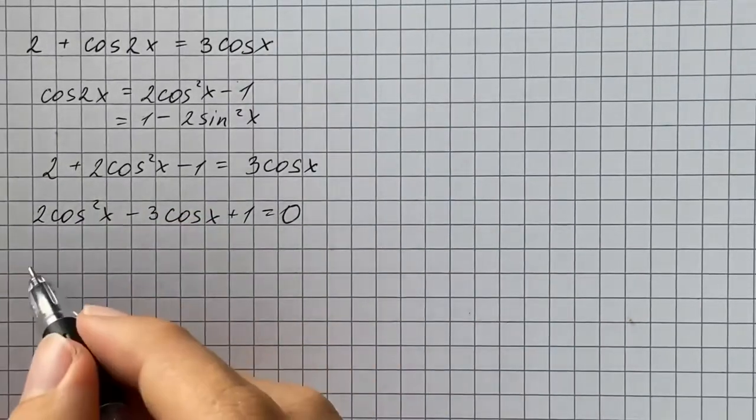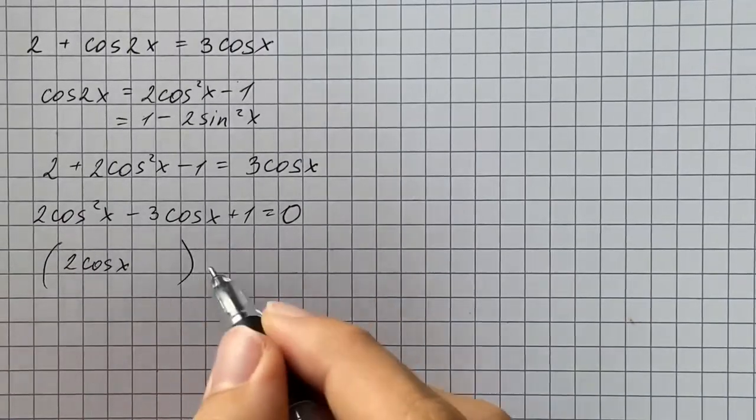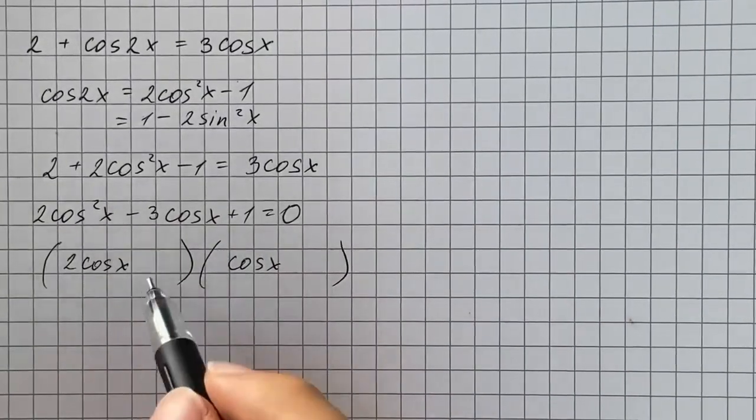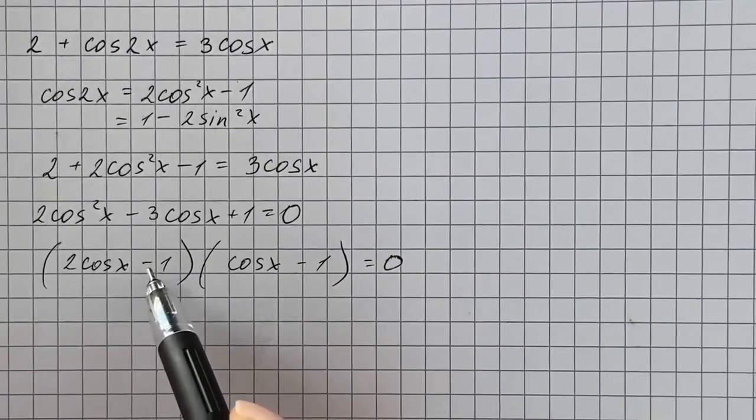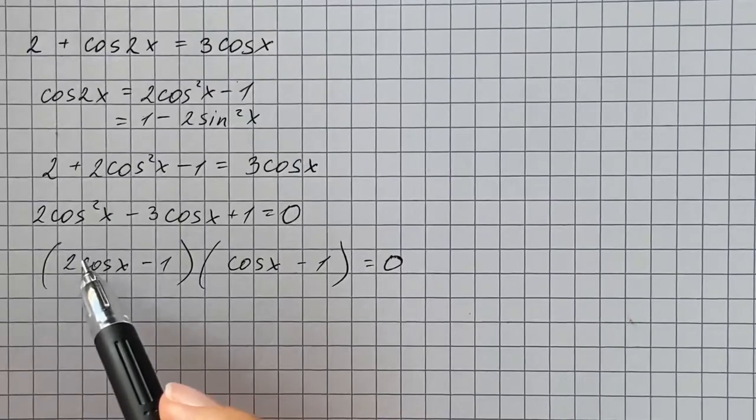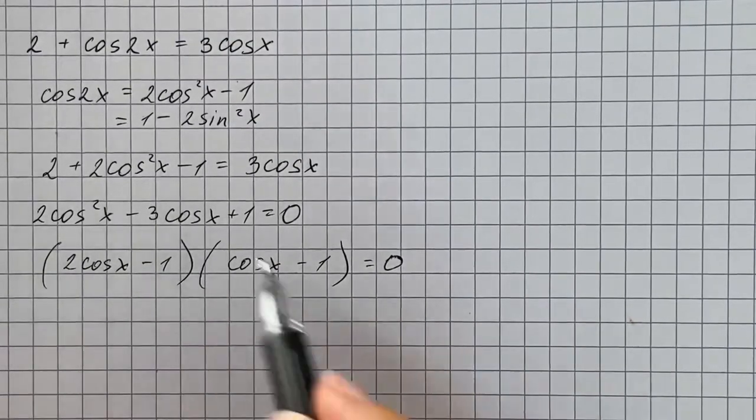And we're going to factor this. So that's going to be factor as 2 cosine of x and cosine of x. And here we're going to use minus 1 and negative 1, so it will give us positive 1, and then we're going to get negative 3 cosine of x back.